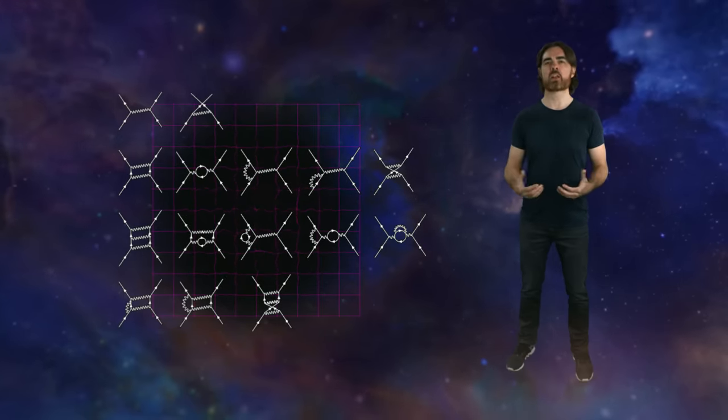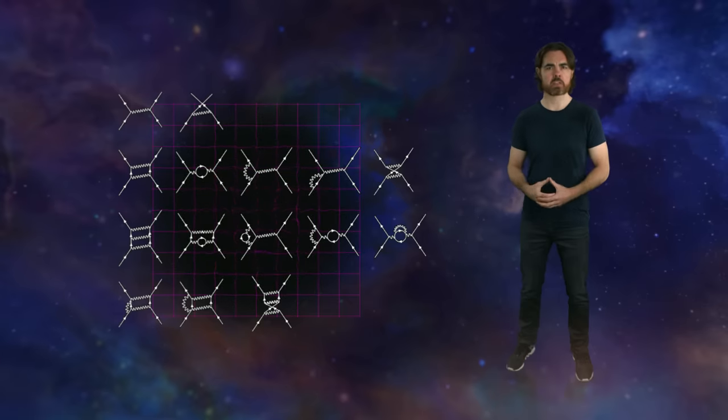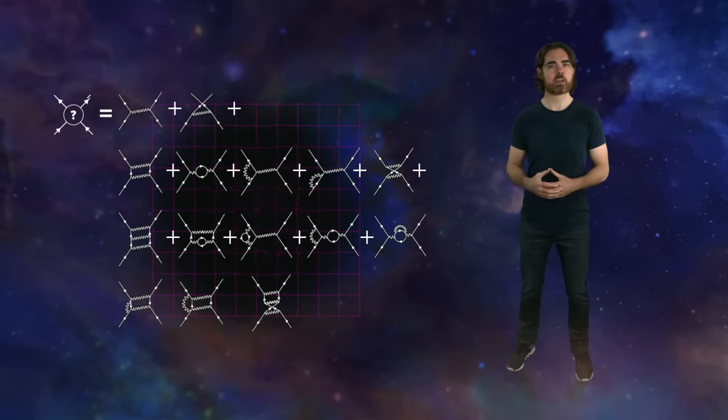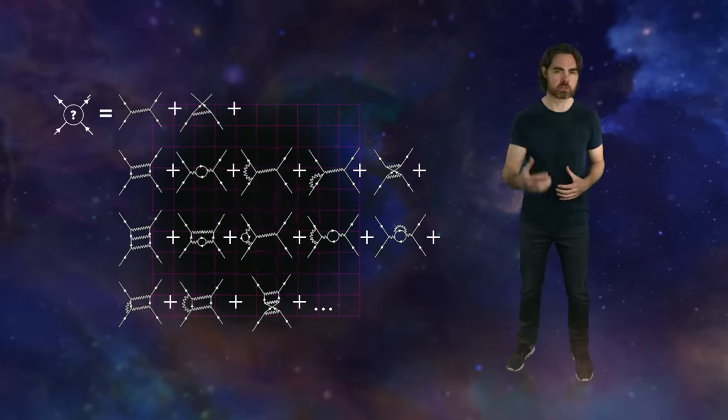We call these idealized interactions intermediate states or virtual states of the field. But in reality, the field never exists in these states. The virtual particles never exist independently. Instead, virtual particles are the mathematical building blocks we use to approximate the complex states of interacting fields.